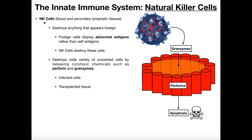An analogy to help understand self-antigen versus foreign antigen: imagine two rival sports teams, like the Los Angeles Lakers and the Boston Celtics back in the 80s — biggest rivals in the NBA. If you were in the LA Lakers locker room pregame and someone with a Celtics jersey walked in, you could immediately tell based on that name tag, so to speak, that they don't belong there. That's kind of what natural killer cells are looking out for — abnormal or foreign antigens — and if they see any, they destroy it.